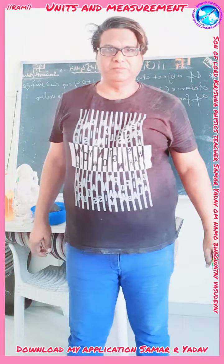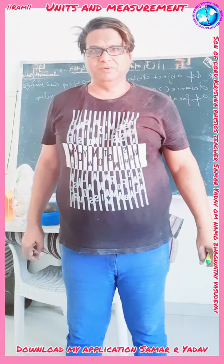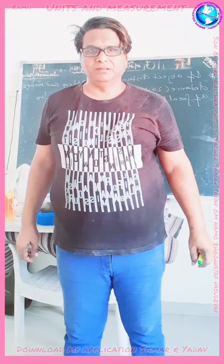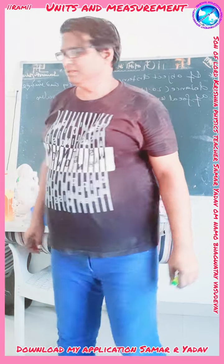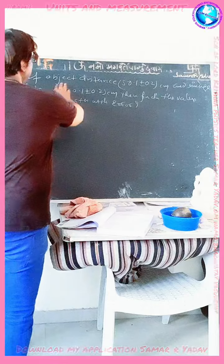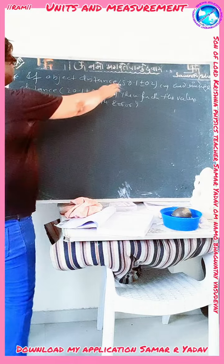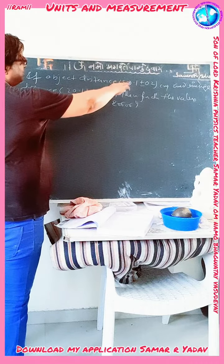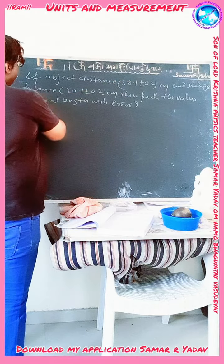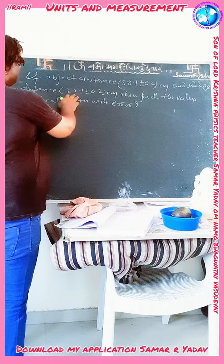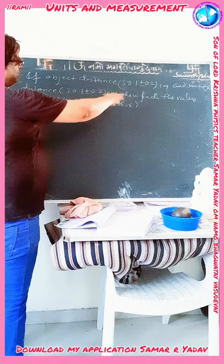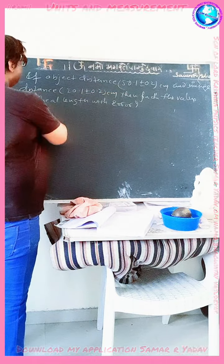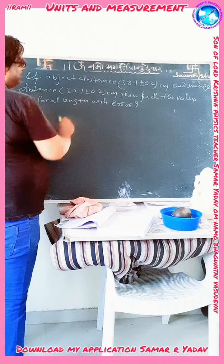Today in a physics unit, I will solve a numerical on units and measurement. The numerical is based on error. The problem is as follows: the object distance u is 50.1 ± 0.2 centimeters, and the image distance v is 20.1 ± 0.2 centimeters. We need to find the value of the focal length and its error.